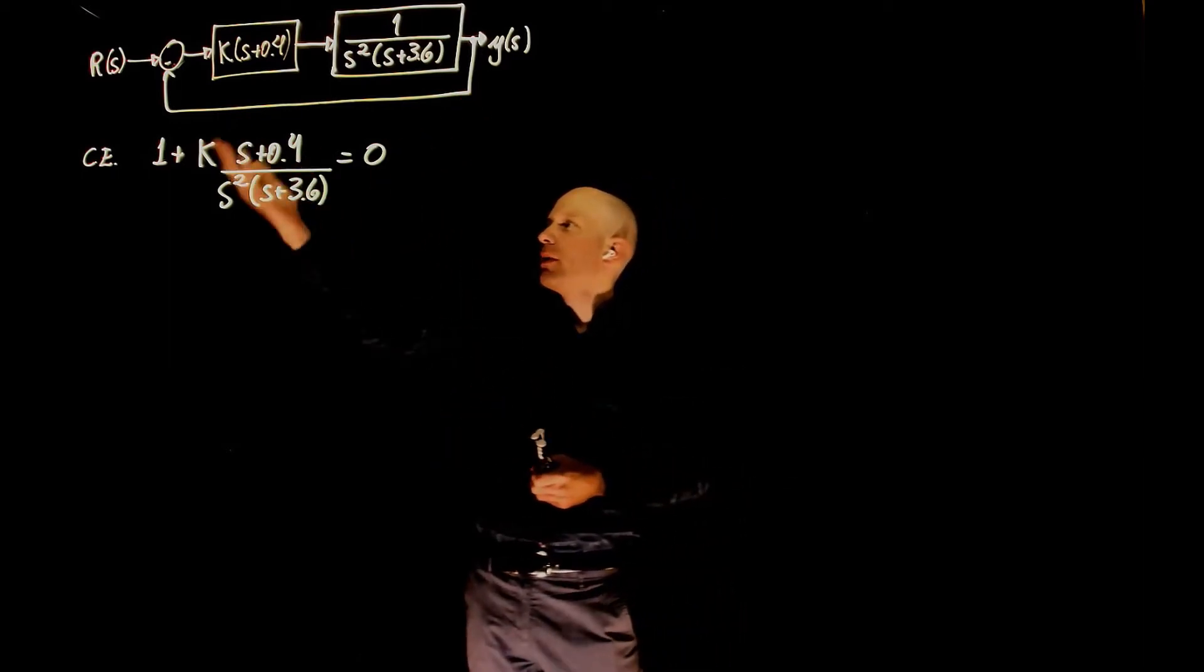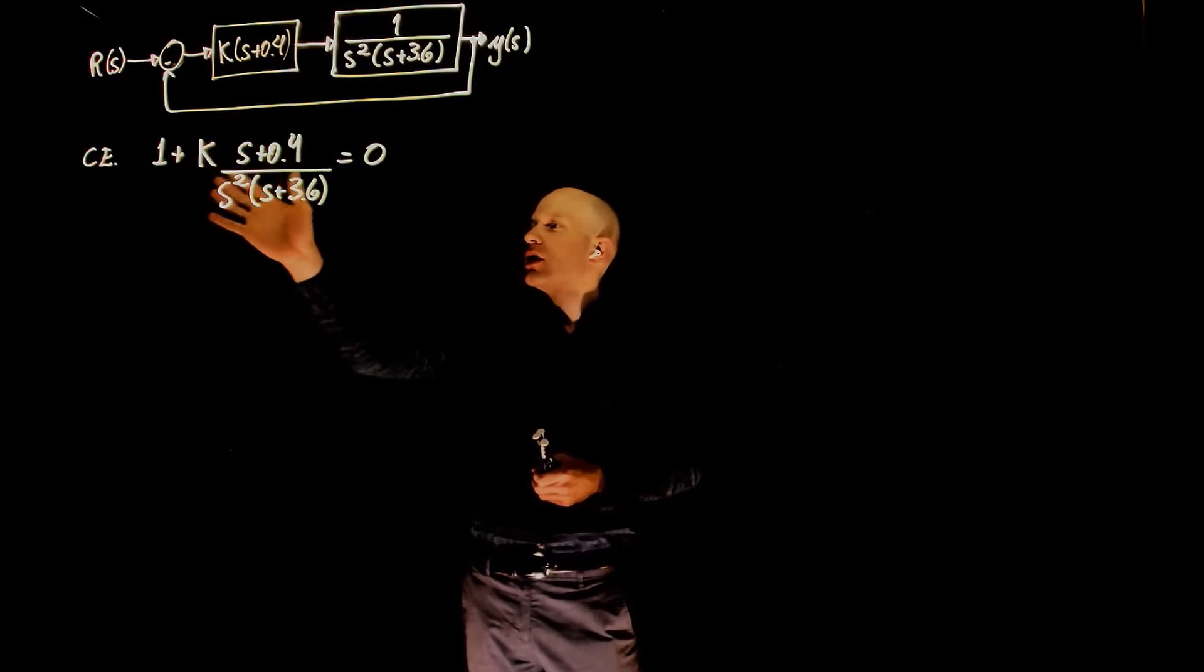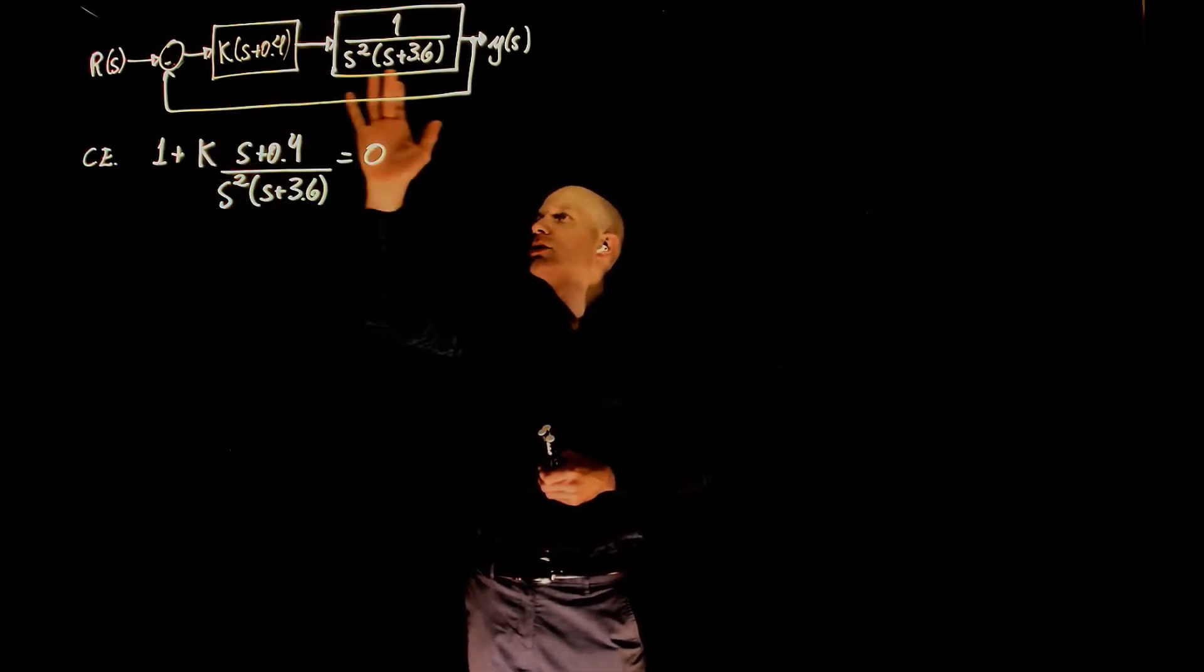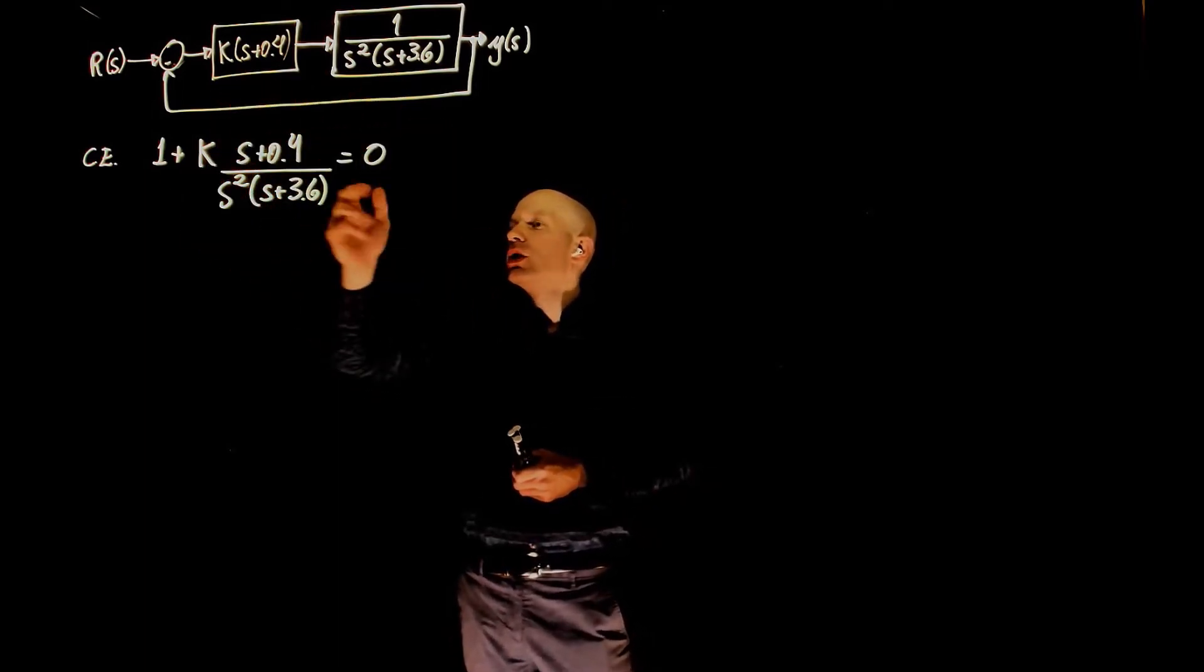Again, we have a unit feedback loop, which will give us the characteristic equation as simply the multiplication of these two equations plus 1 equals to 0.